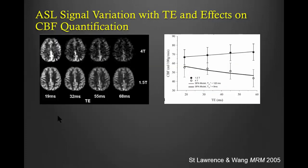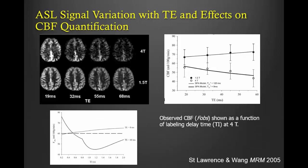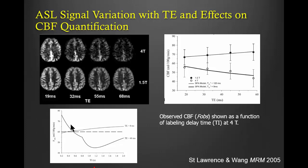As experimental validation, we did a study at 4T measuring the TE dependence of the ASL signal. At 4T, the ASL signal is lost very quickly with increasing TE, whereas at 1.5T it is not. When you calculate CBF, there is a large underestimation at long TE at 4T compared to 1.5T. The underestimation with TE of 60 milliseconds can reach 25% at 4T if the T2* effect is not accounted for.